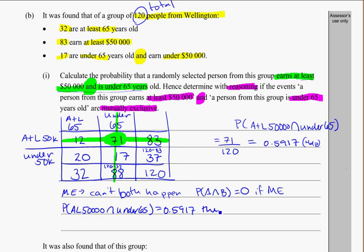So we would say this is not equal to 0. Therefore, the events of earning—I'll just abbreviate—